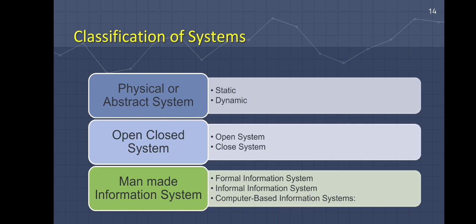Next is the open closed system. To achieve their goals, systems interact with their surroundings. Environmental elements for the system are things that aren't part of the system. Systems can be split into two types based on how they interact with their environment, and these two types are the open system and the closed system.